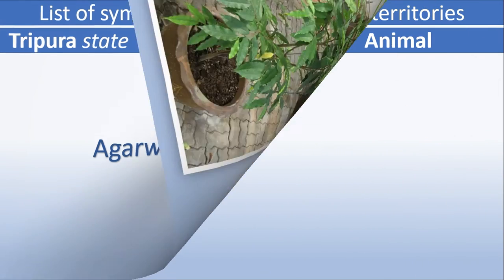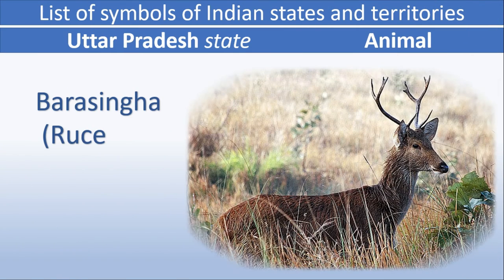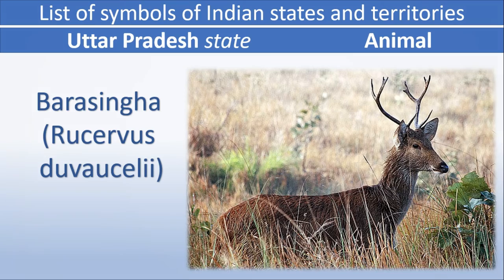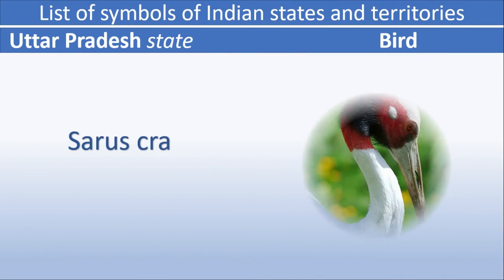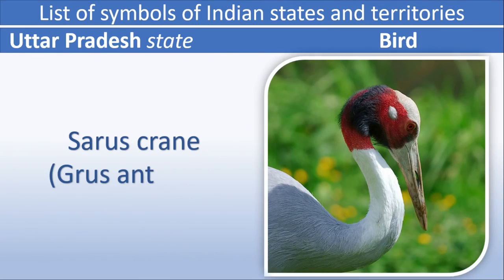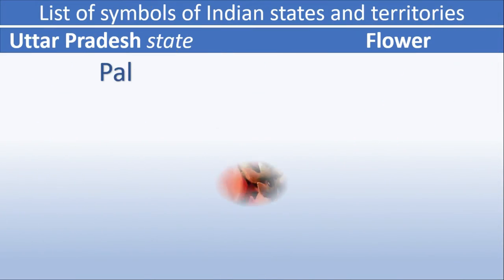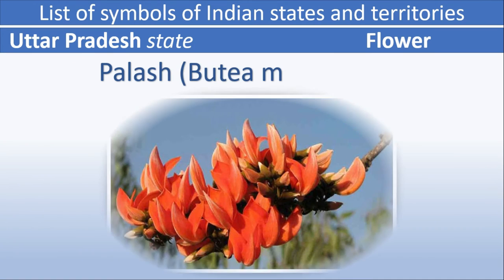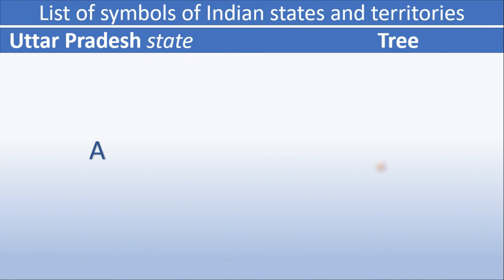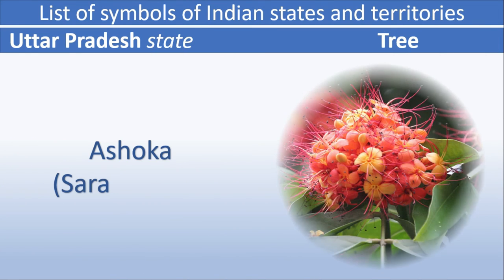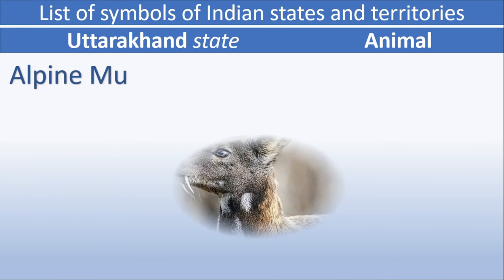Uttar Pradesh animal: Barasingha. Uttar Pradesh bird: Sarus Crane. Uttar Pradesh flower: Palash. Uttar Pradesh tree: Ashoka.